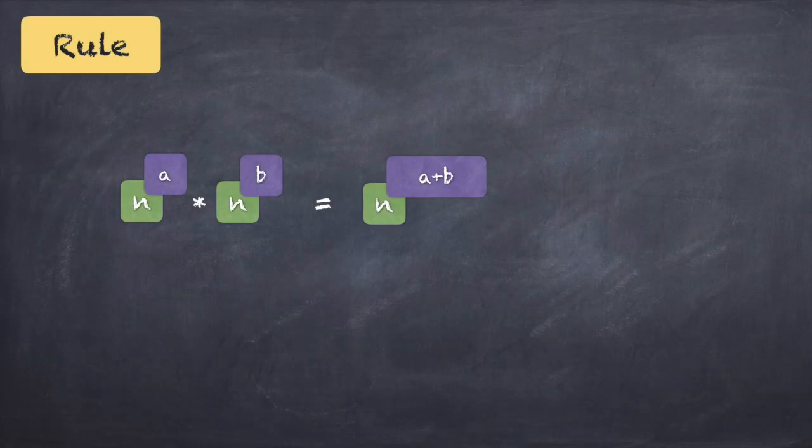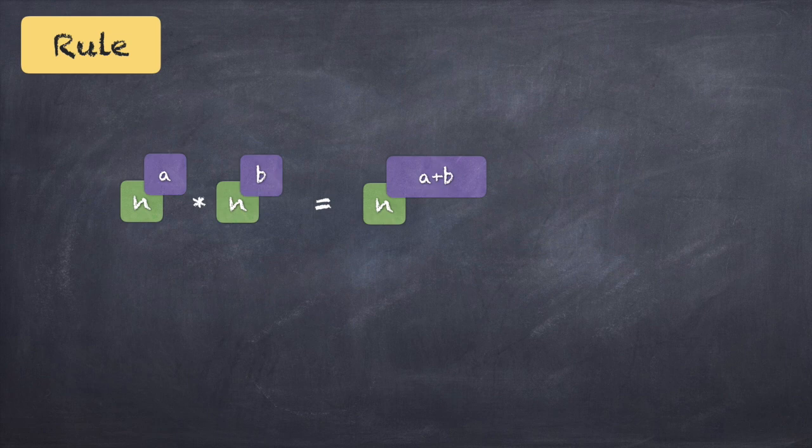Rule number one: if you have n raised to a, multiplied by n raised to b, the result is n raised to a plus b. This is the formula — when the base is the same (n and n are the same) and the numbers are being multiplied, the powers get added.